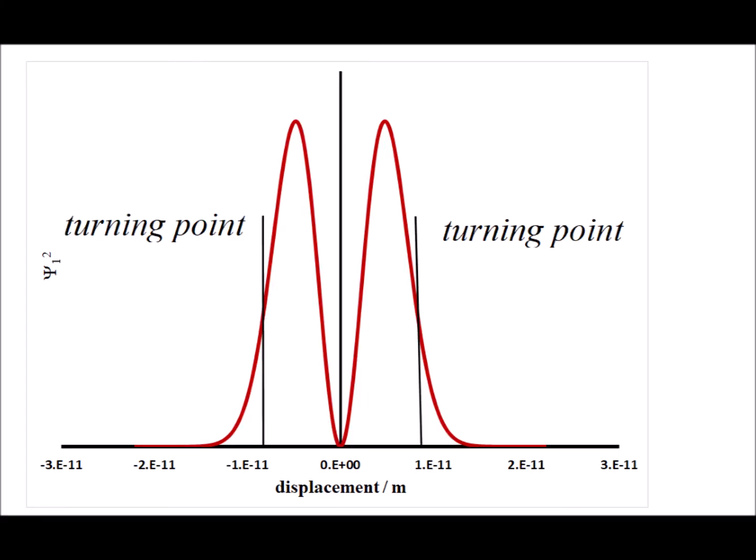Here is the first excited state, n equals one. And we notice now, curiously, that the bond spends virtually none of its time at the equilibrium length. It's going to be almost entirely either shorter or longer, and we see the black vertical lines, which show us the limits for the classical oscillator with the same energy as the quantum oscillator for the n equals one state.